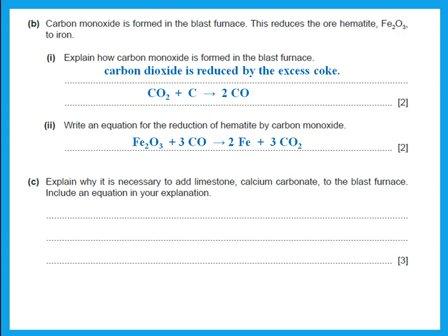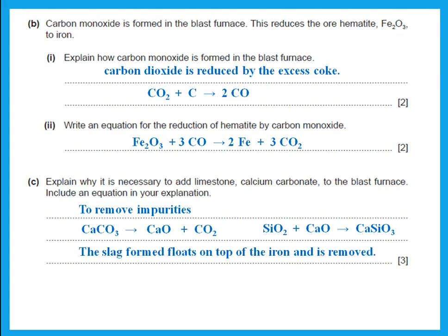Explain why it is necessary to add limestone to the blast furnace — we add calcium carbonate to remove impurities, and he says include an equation. The calcium carbonate breaks up to give calcium oxide and carbon dioxide. Then the calcium oxide reacts with sand to give calcium silicate, which is slag. This slag floats on top of the iron and is removed, so this is how we remove impurities from the blast furnace.